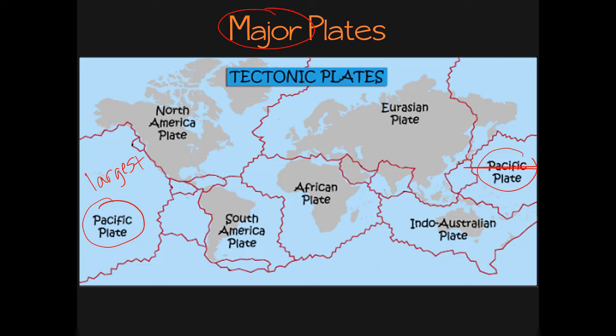The Pacific Plate is over here too, because Earth is round — if we wrap this flat map around, these two parts join into one. The North American Plate holds the continent of North America and also part of the northern Atlantic Ocean to the east, so the North American Plate has both continental and oceanic crust. The South American Plate is the same way — it holds the continent of South America but also the southern Atlantic Ocean to the east, so it has both types of crust as well.